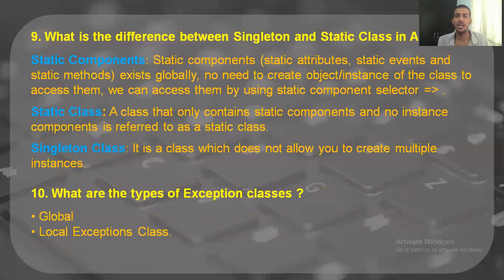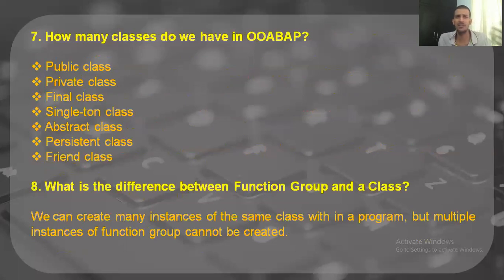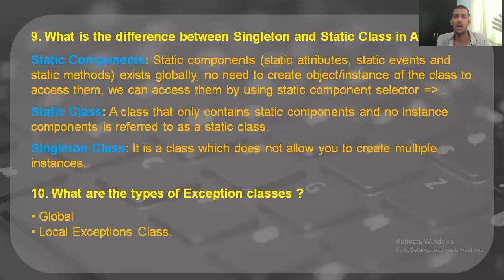What is the difference between a singleton class and a static class in ABAP? Static components are those which exist globally — you don't have to create them; the instance need not be created, you just access them using a selector. A static class is a class which only contains static components and no instance component is referred to it. A singleton class is a class which does not allow you to create multiple instances. We have public class, final class, singleton class, persistent, and friend class — different classes that we'll be looking at in bits and pieces.